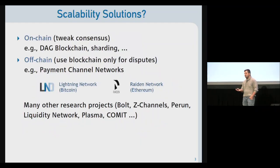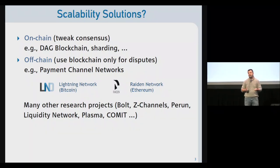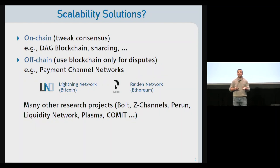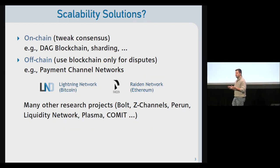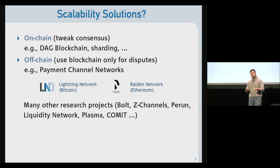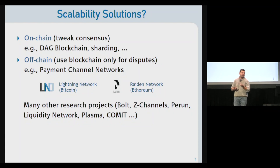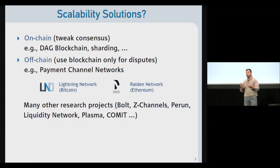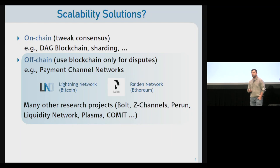This scalability problem has been tackled by the community, and we can roughly group the approaches into two trends. One is on-chain, where they tweak consensus algorithms and protocols to improve the transaction rate. The other is off-chain: we use the blockchain as minimally as possible, only to solve disputes between users. This is where payment channel networks fit in, with examples like the Lightning Network for Bitcoin and the Raiden network for Ethereum.